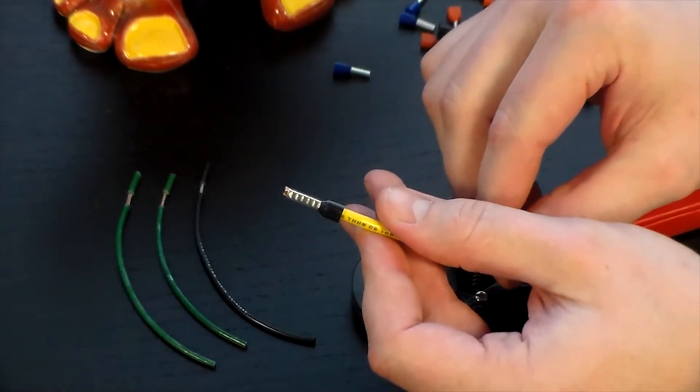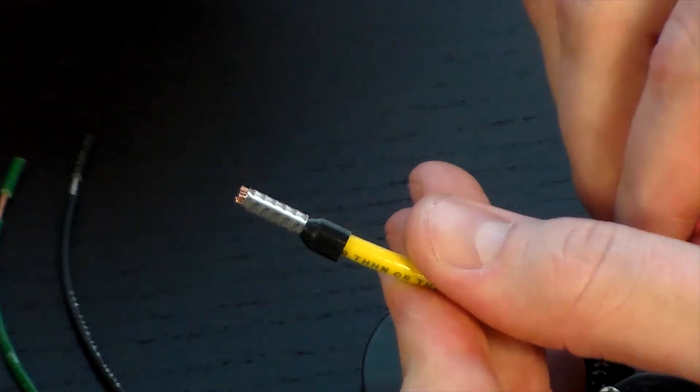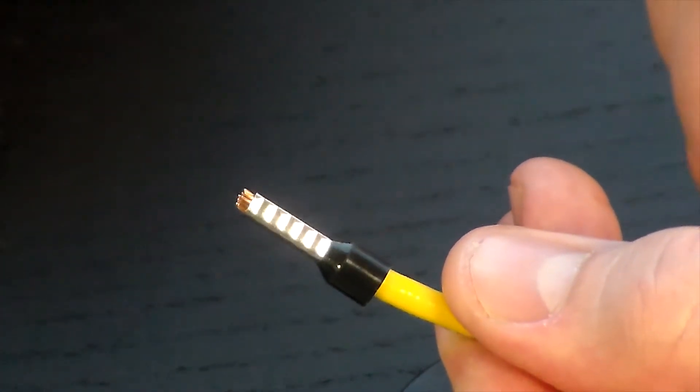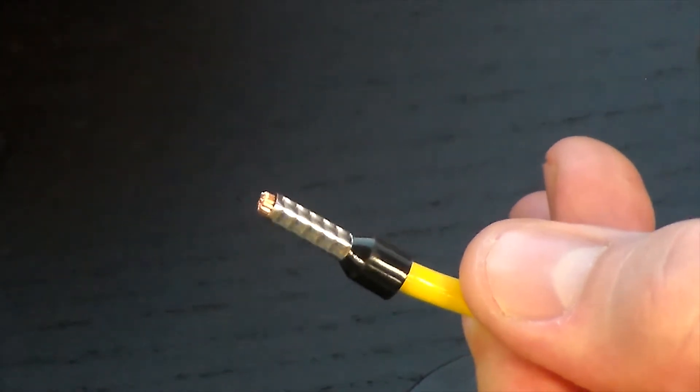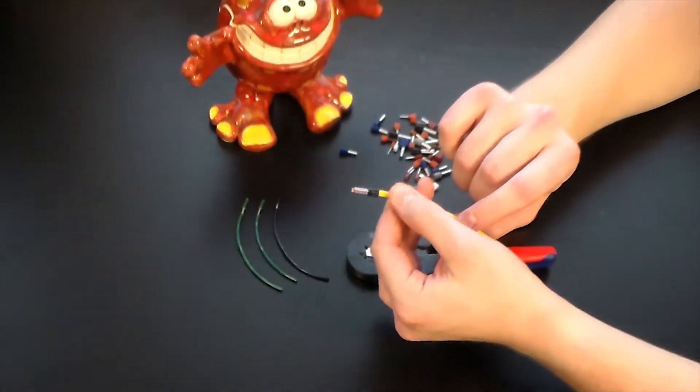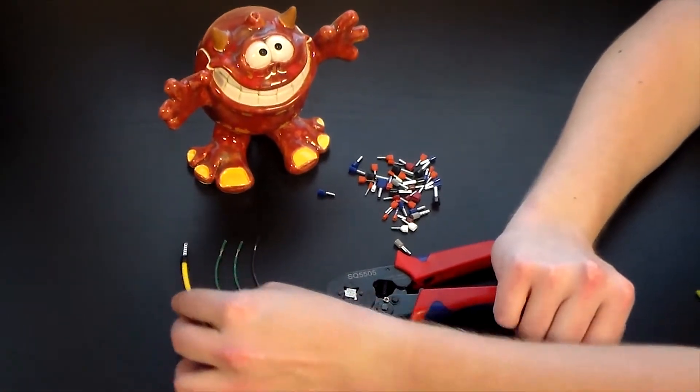Let's move in on this so you can see the indentation. Gives a real nice crimp. All right, so that's single insulated.